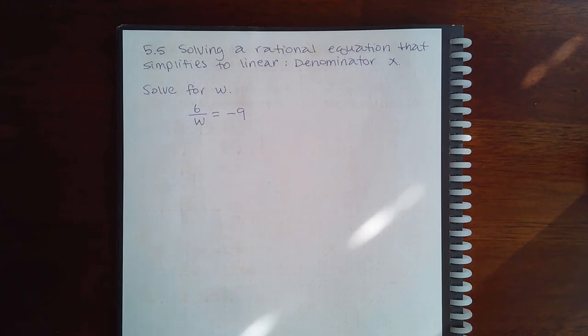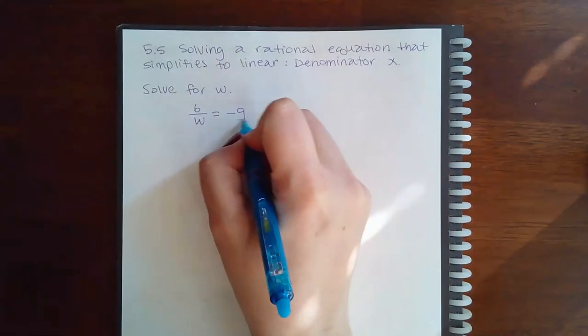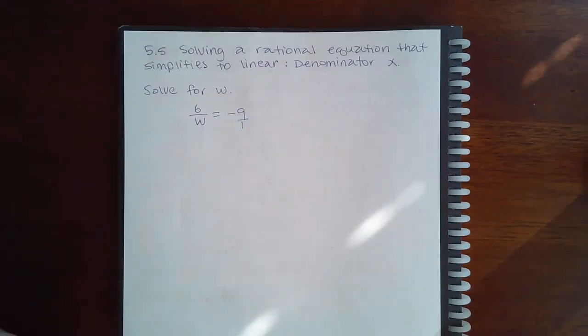or another way to think of that is multiply every term in the equation by the lowest common denominator. So in this case,